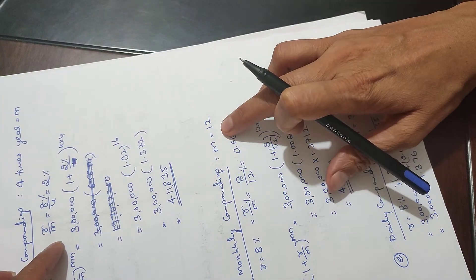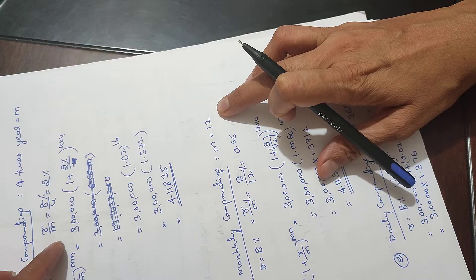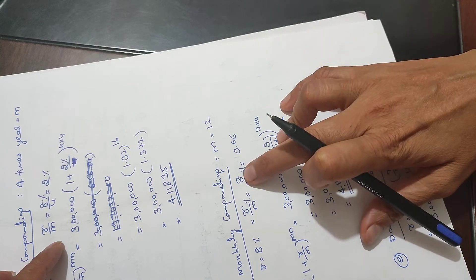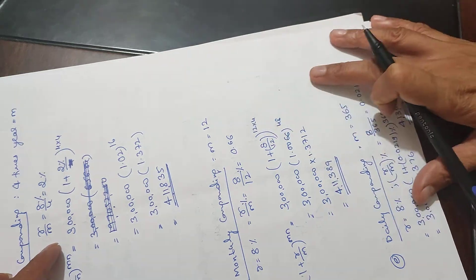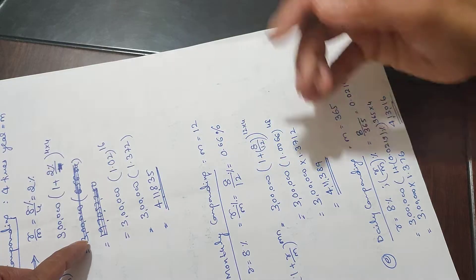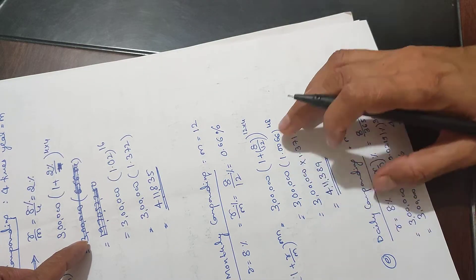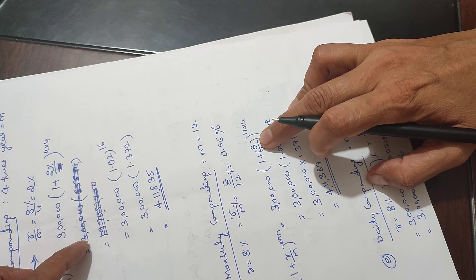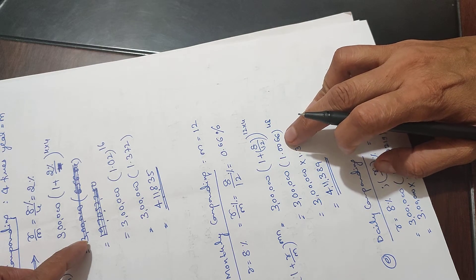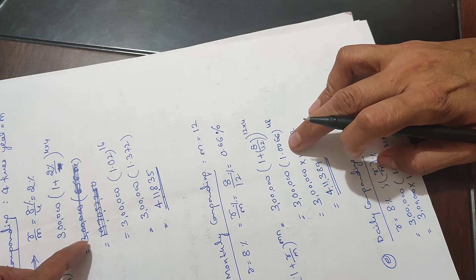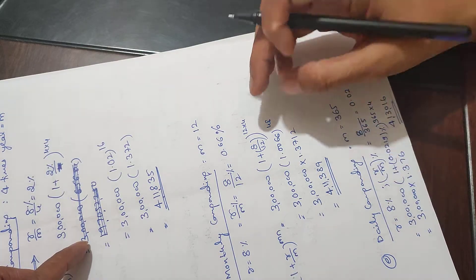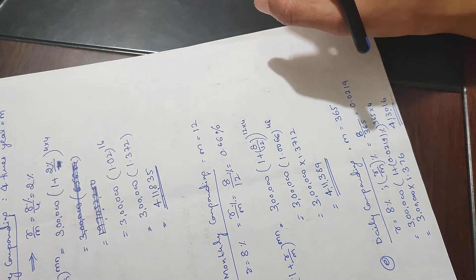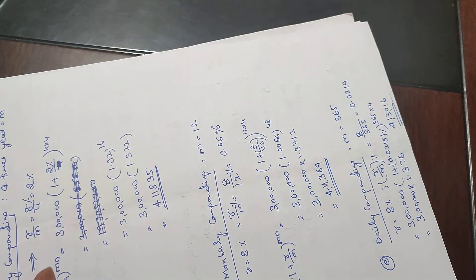Monthly compounding - there are 12 months in a year, so M equals 12. We take 8 by 12, which is 0.66 percent. The formula is 3 lakh times 1.0066 raised to 48 (12 times 4), which equals 4 lakh 11,318. When calculating, use brackets properly for easy computation.